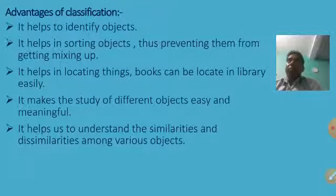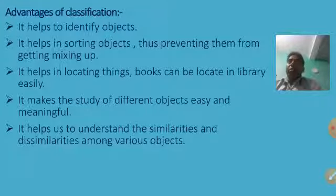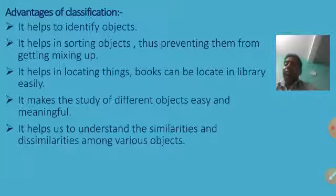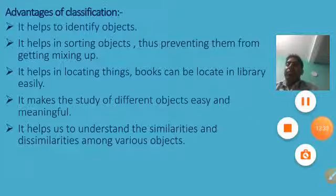Classification helps in locating things. For example, books can be located in a library easily. If books were not arranged by subject, finding a math book would take a lot of time. Librarians put all subjects separately — math books in one shelf, science books in another. Classification also helps us understand the similarities and dissimilarities among various objects.